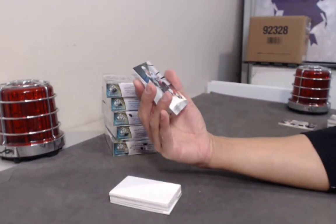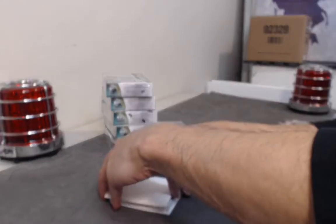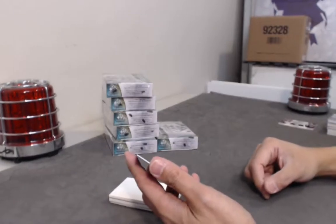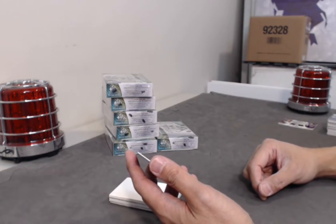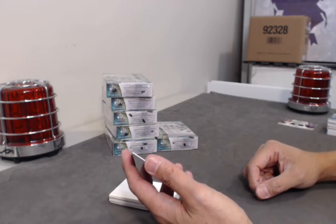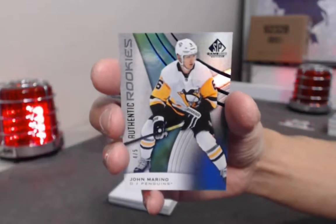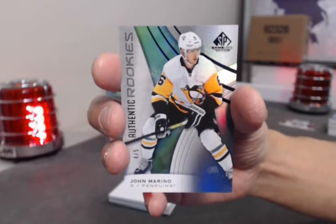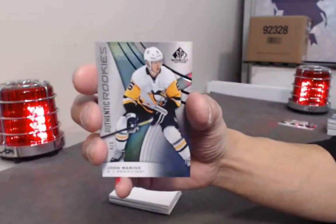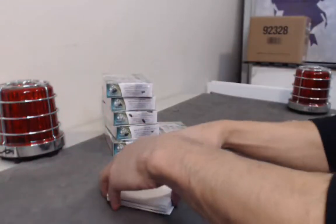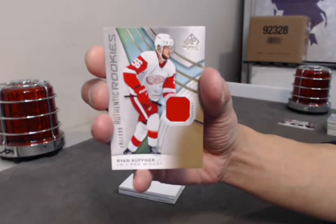All right, we got a base to 275, Thomas Chabot. Ooh, this is a big hit. We have a rookie parallel black number to only five - John Marino! John Marino Authentic Rookies Black, four of only five. Oh, that's a pretty big hit. And we got a rookie jersey to 599, Ryan Kuffner. Anybody got Marino?